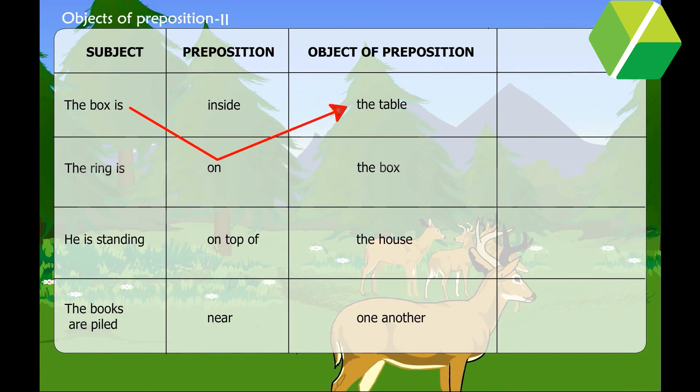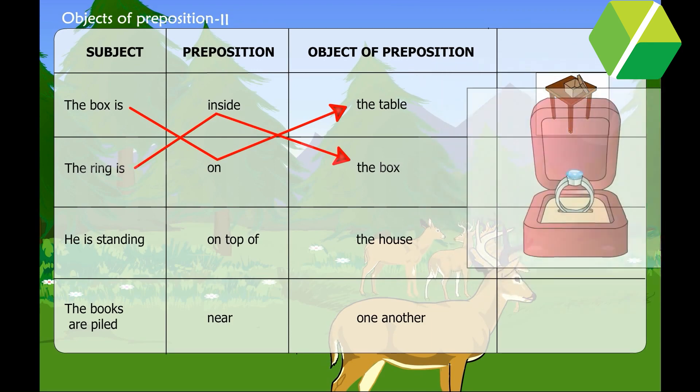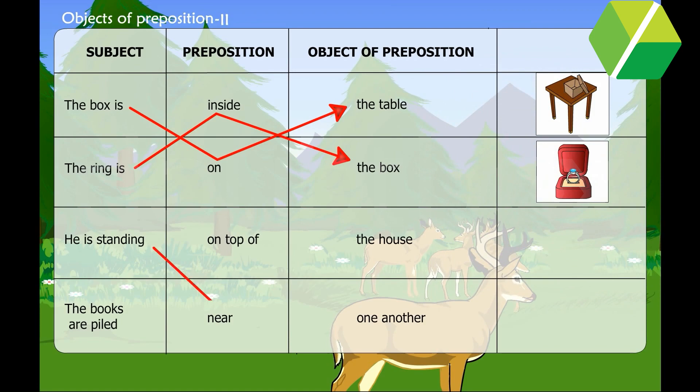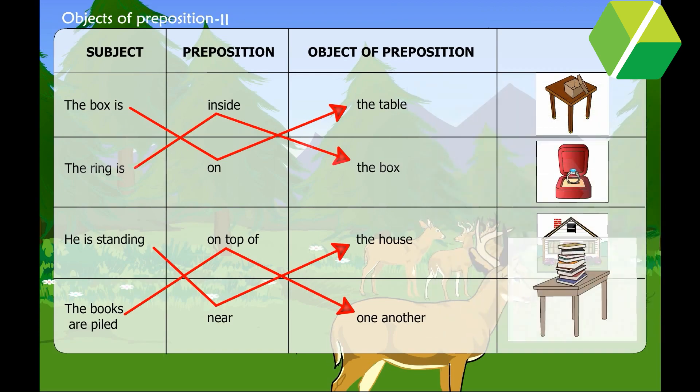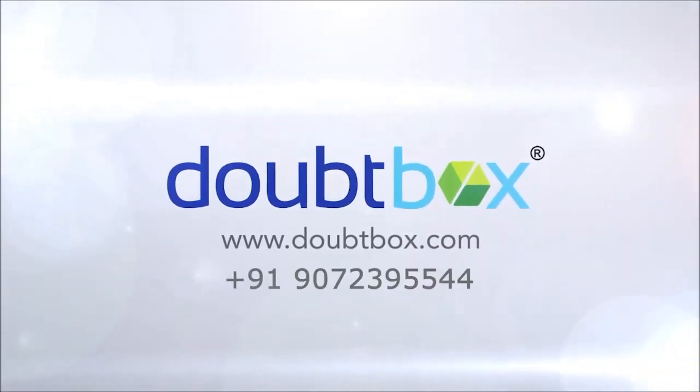The box is on the table. The ring is inside the box. He is standing near the house. The books are piled on top of one another. He is interested in life.